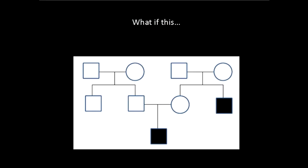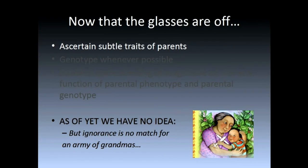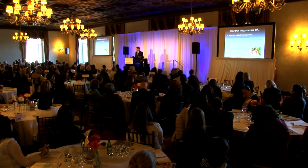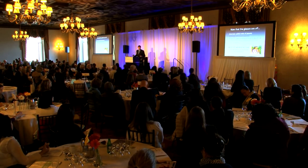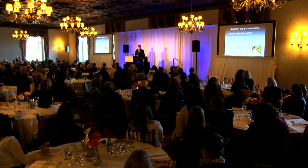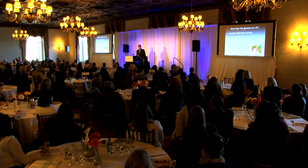So what we want to do is ascertain subtle traits of parents, genotype whenever possible, and get our minds around the information we have in hand. We can now ascertain quantitative traits in parents, and genotype for around $1,000 a genome. When we can do that, we want to understand the magnitude of risk to a grandchild — essentially a sibling — as a function of parental phenotype and genotype. Right now we're estimating that risk is at least five times higher than the general population risk, and we think we may be able to predict in which cases autism will occur.